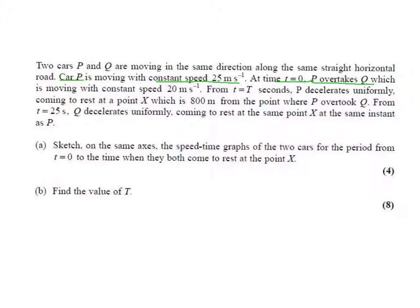Q is travelling with a constant speed of 20 meters per second. From a point of capital T seconds, P decelerates uniformly and comes to rest at a point which is 800 meters from where P overtook Q. And from 25 seconds, Q decelerates uniformly and it comes to rest at the same point at the same instant as P.